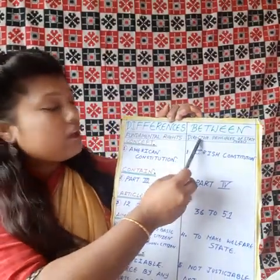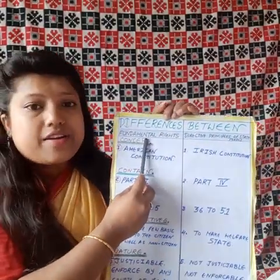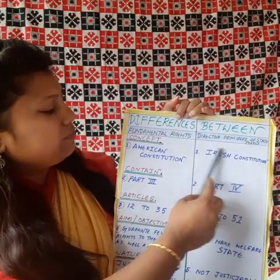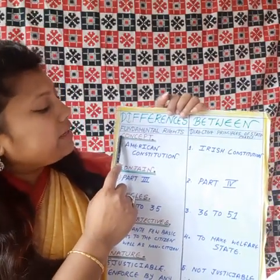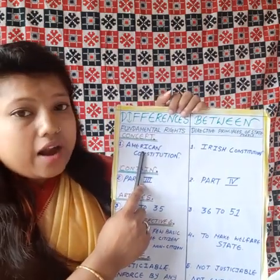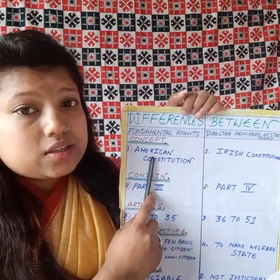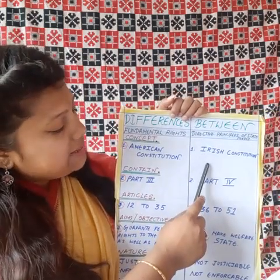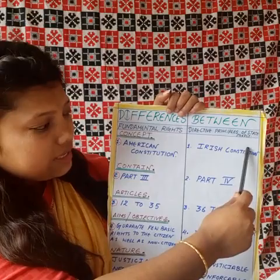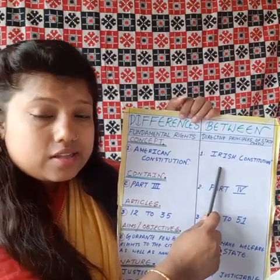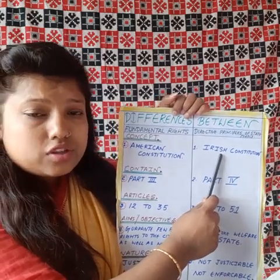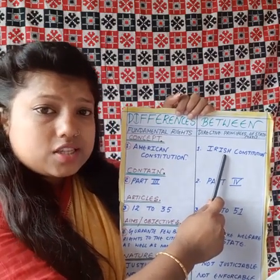Now, the differences between Fundamental Rights and Directive Principles of the State Policy. Point number one is Concept. Fundamental Rights are borrowed from the American Constitution, whereas Directive Principles of the State Policy are borrowed from the Irish Constitution. Directive Principles are also known as the philosophical parts of the Indian Constitution.